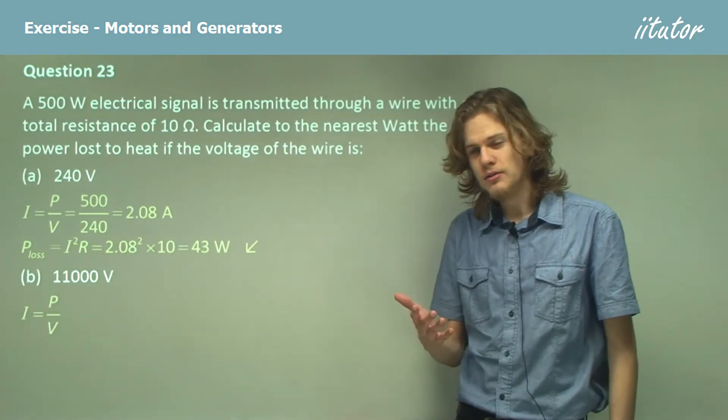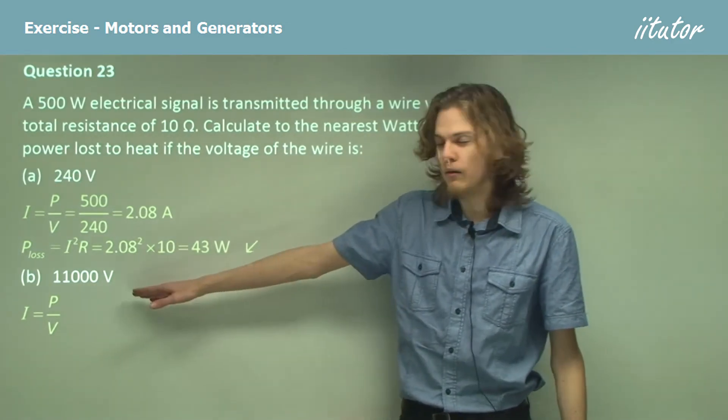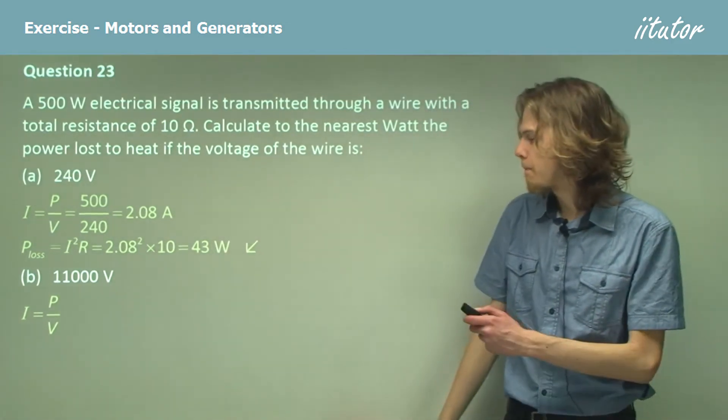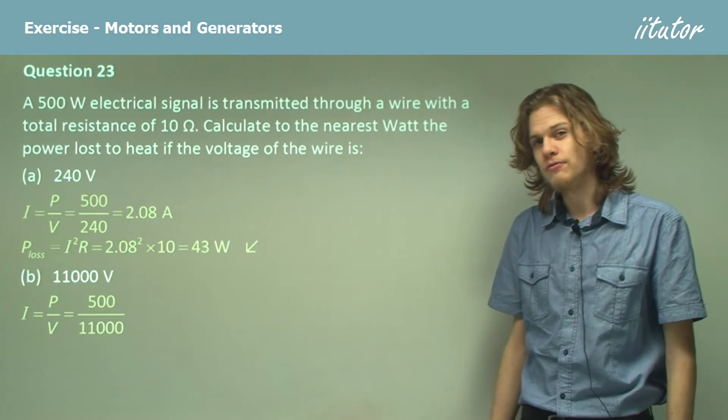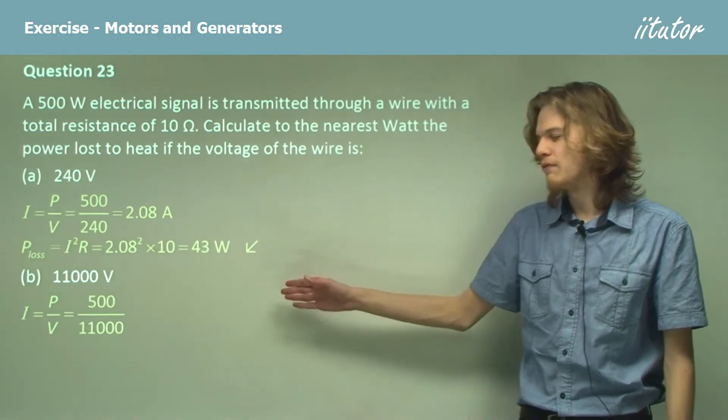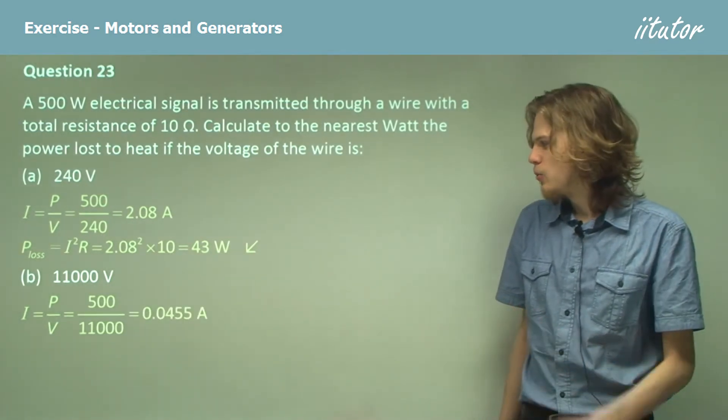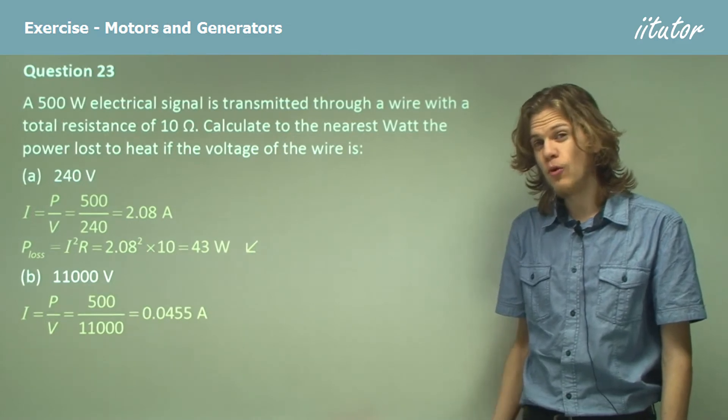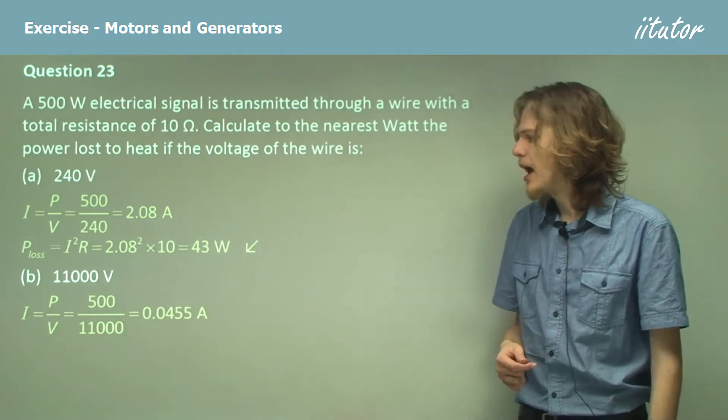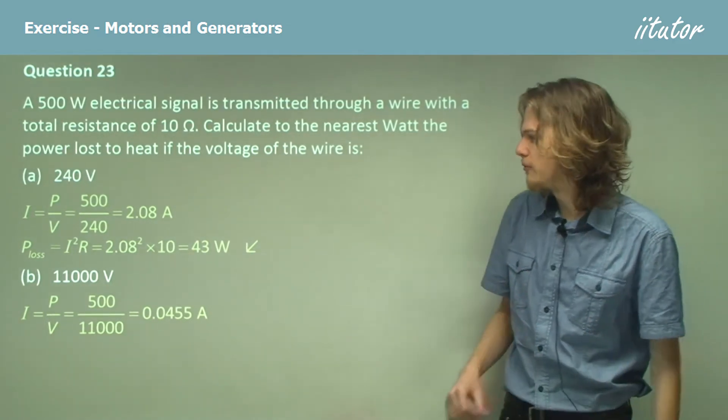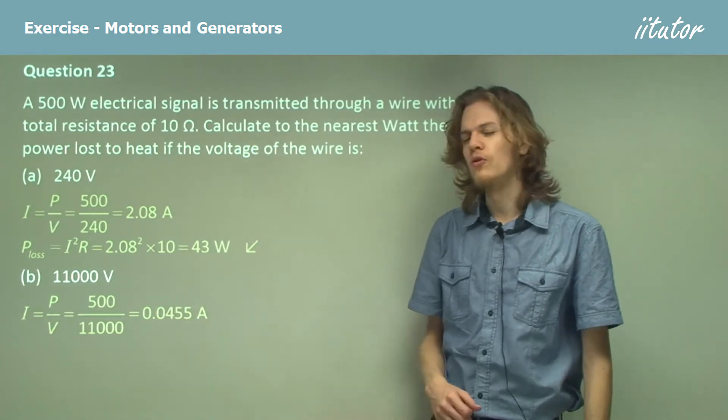We can use the same equation. Our voltage is different but the power will be the same. So this time it'll be 500 watts over 11,000 volts, which will give us 0.0454545 amperes. But we can round it off to about 0.0455.